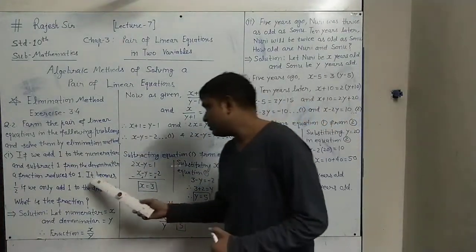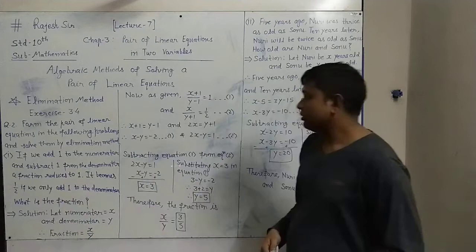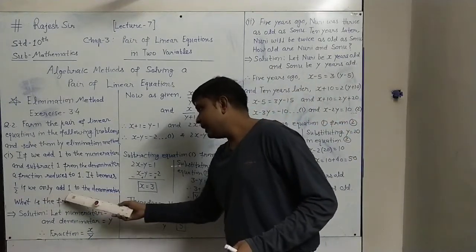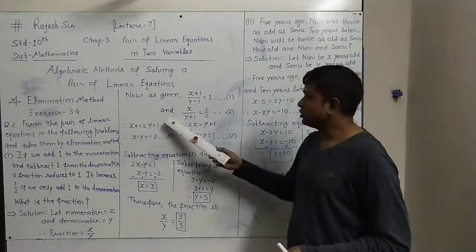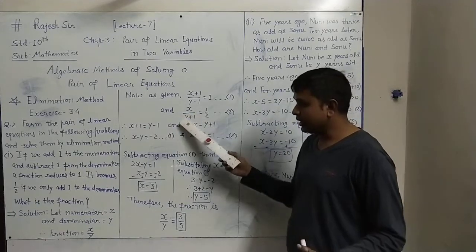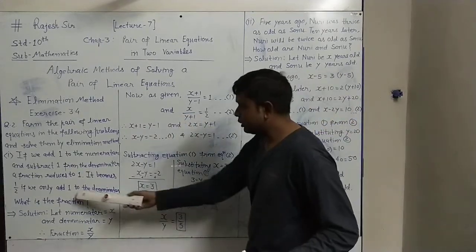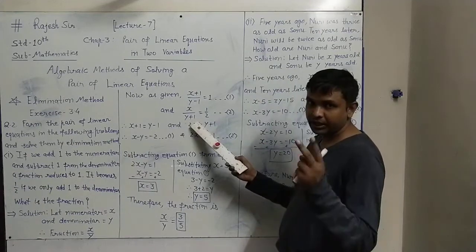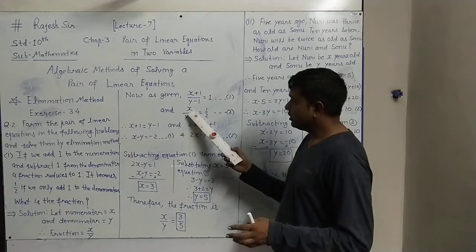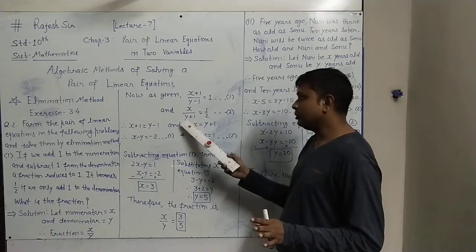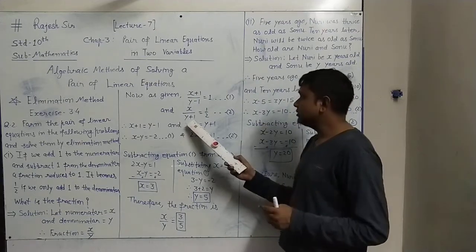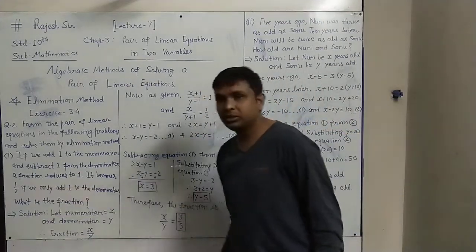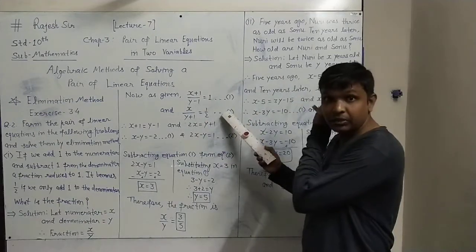The second situation: it becomes 1/2. If we only add 1 to the denominator, the numerator stays as x and the denominator becomes y+1. Then the fraction equals 1/2. So we have equation number 2: x/(y+1) = 1/2.